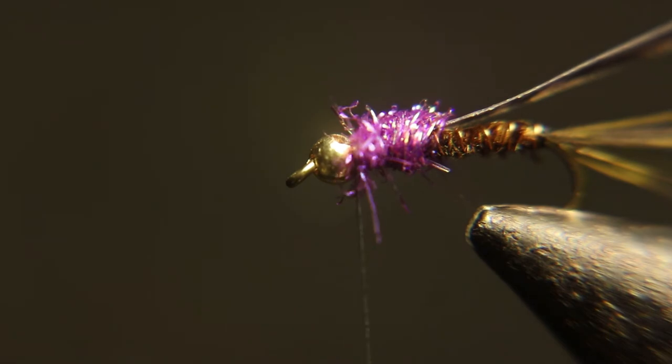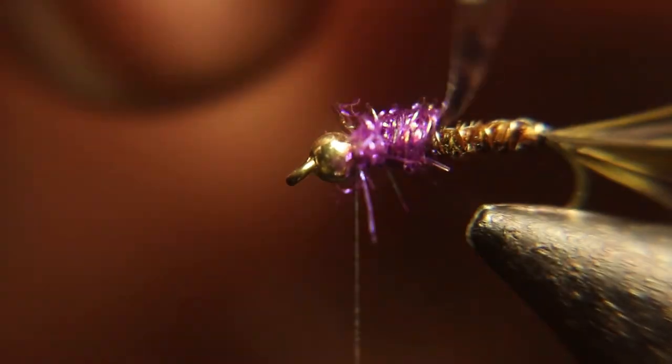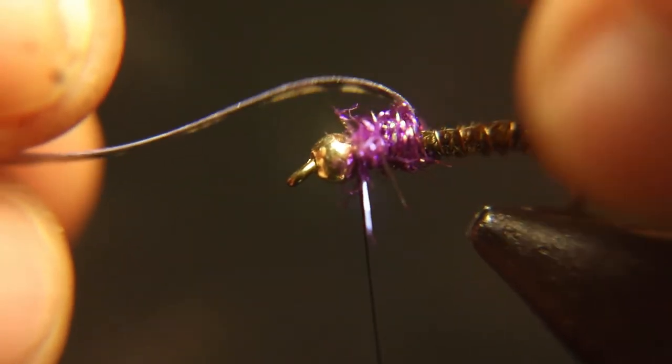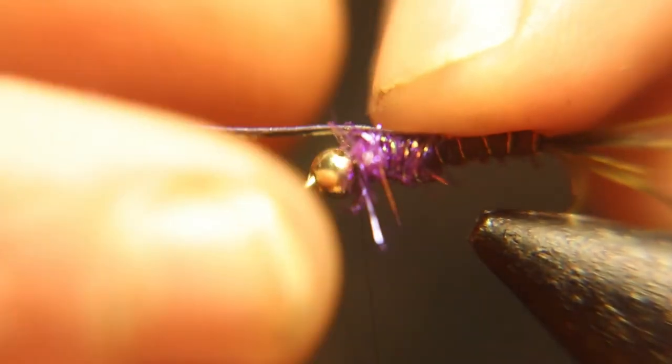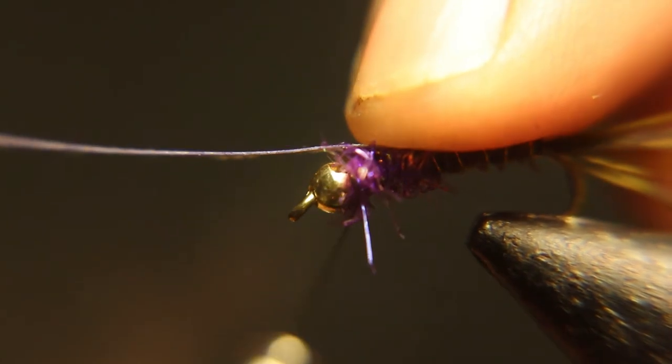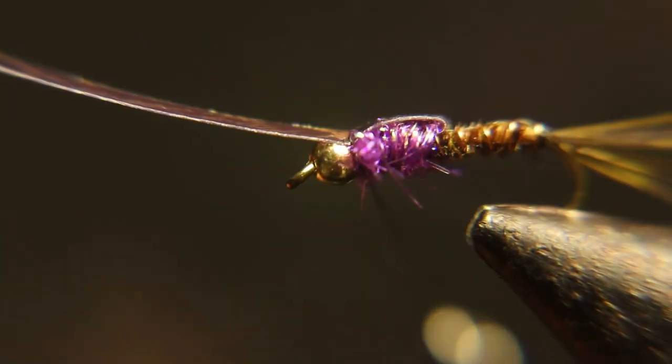Now we're going to grab that nymph skin. I like to put it right behind the dubbing, put like a little fold in the nymph skin. It seems to work better and it plays better and it fishes better. We're going to put that little thing in, tie it down below the bead, and cut the excess off.